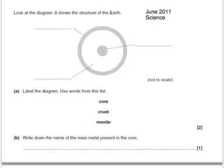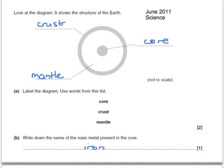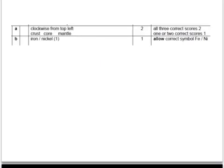Look at the diagram — it shows the structure of the Earth. Label the diagram using words from the list. The outermost layer would be the crust. The innermost would be the core. And between would be the mantle. Write down the name of the main metal present in the core — this would be iron. An alternative answer to that last one is nickel.